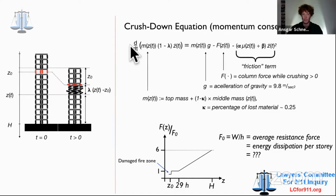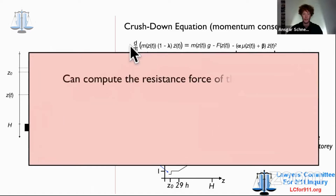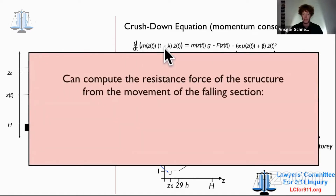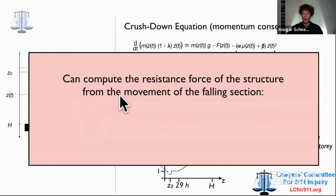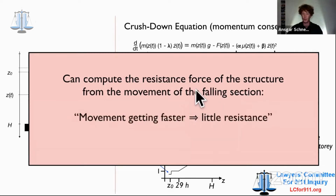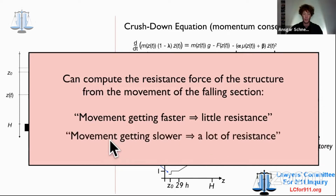I won't comment further on the equation right now — you can look it up in the papers. I want to emphasize that this mathematical equation is a tool to compute the resistance force of the structure while the building collapses, derived from the movement of the falling section. Once I know the movement of the section, I can compute the resistance force. If the movement is getting faster, you can conclude that there is little resistance; if the movement is getting slower, you can conclude that there is a lot of resistance. So we have to investigate the movement of the building.